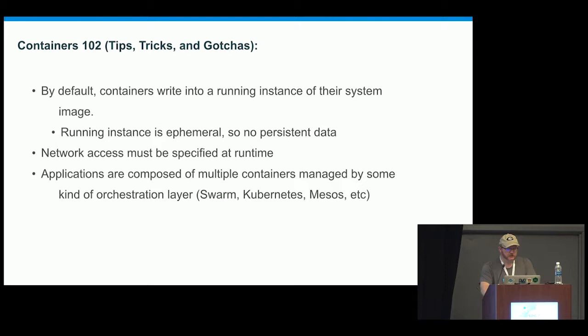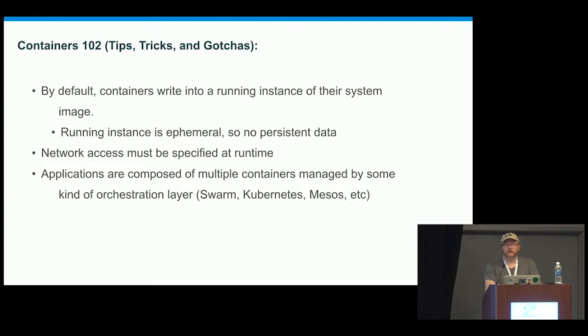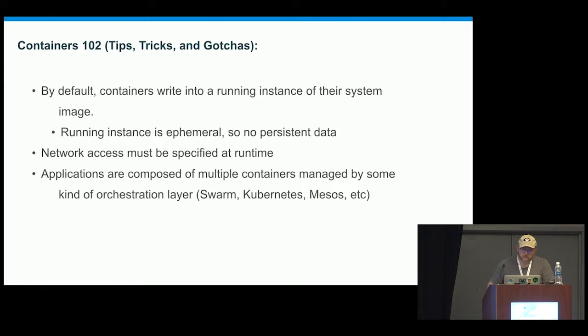By default, containers write into a running instance of their system image. If you need to write something to disk in a container, it's going to write it into that image. That image is also ephemeral — it's going to go away when the container dies. When that process dies, Docker as a container engine will completely forget everything that you have written to that image. Regarding whether the image is resident in RAM: it depends on your graph driver, which we'll talk about in a little bit. The write layer is often persistent in RAM until it flushes.